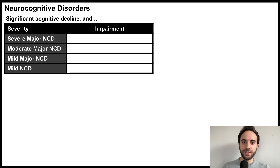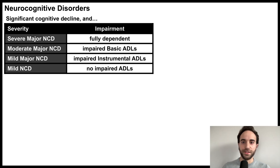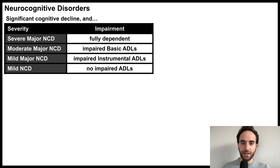To meet criteria for one of these disorders, a patient must have significant cognitive decline and some degree of functional impairment due to this cognitive decline. Severity is determined based on level of functional impairment, as measured by impairment in activities of daily living, or ADLs. There are two categories of ADLs: basic ADLs and instrumental ADLs.